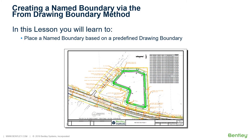Creating a Name Boundary via the FromDrawingBoundary method. In the previous section, you created a name boundary via the ByTwoPoints method. In this section, you will utilize another method: FromDrawingBoundary. A drawing boundary is a predefined area on a sheet model. Using this method in conjunction with setting the drawing scale, you can visualize exactly the area as it pertains to the area on the sheet. You will learn to place a named boundary based on a predefined drawing boundary.